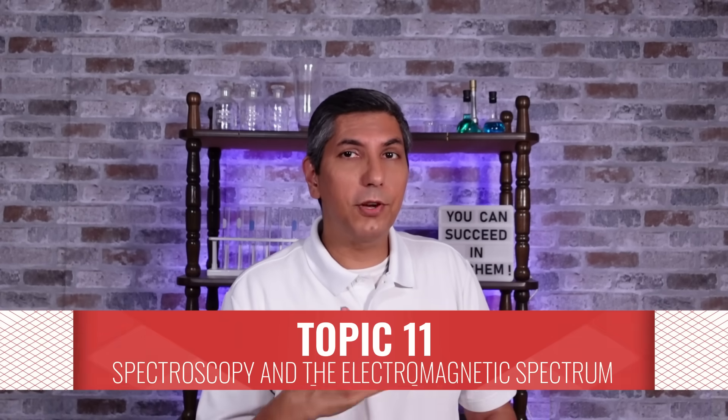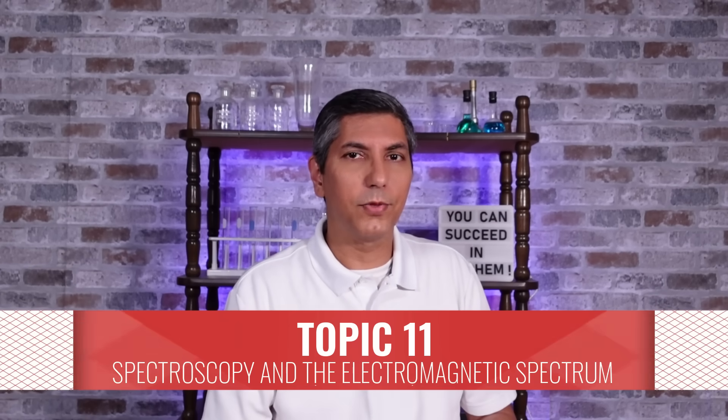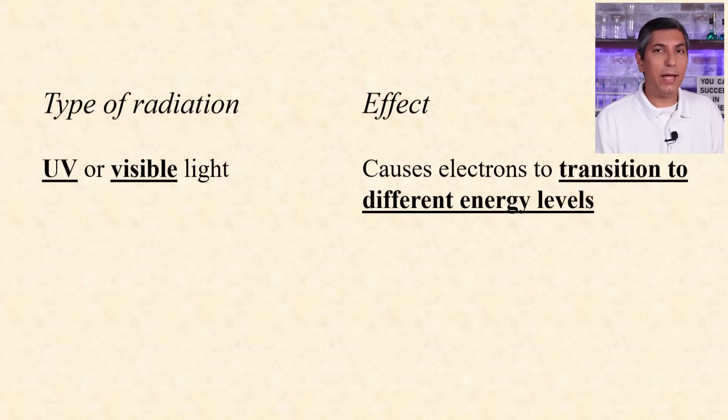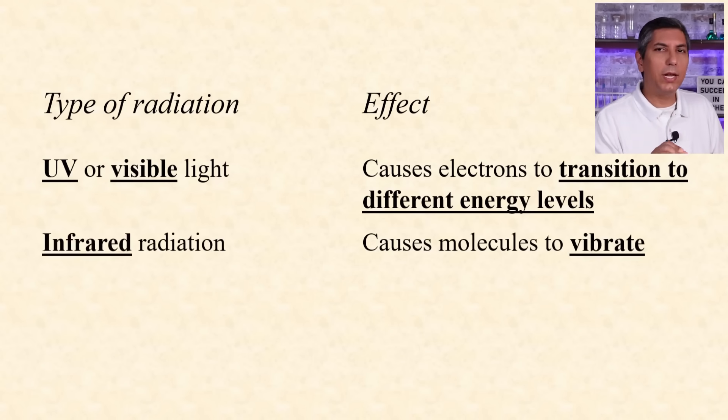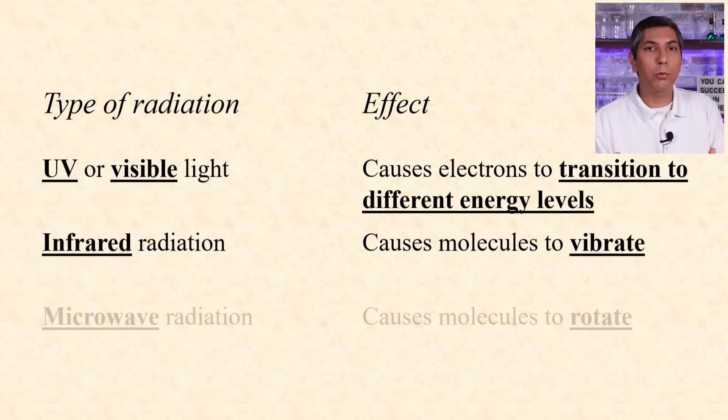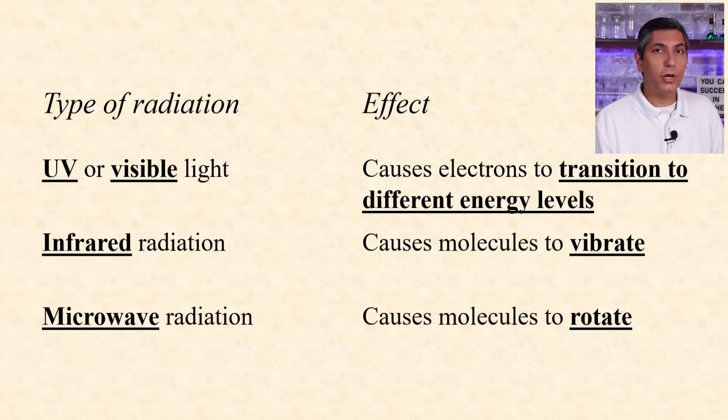Different parts of the electromagnetic spectrum do different things to molecules. For example, ultraviolet or visible light can cause an atom's electrons to transition to different energy levels. If you see the phrase infrared radiation in the question, you should realize that the molecule is undergoing vibrations at those frequencies. And finally, if the question mentions microwave radiation, you can associate that with rotation of molecules.